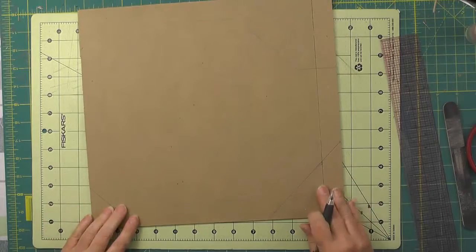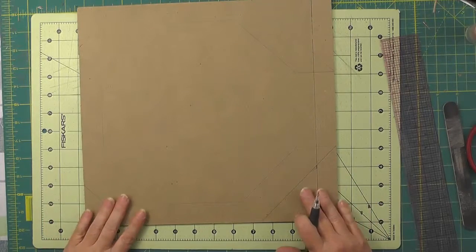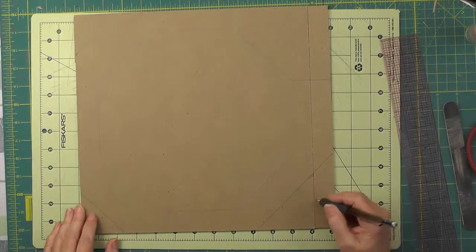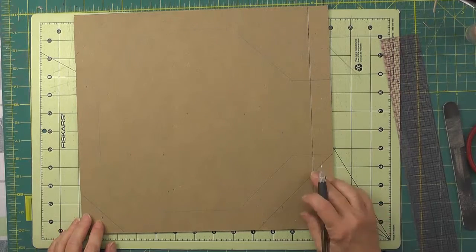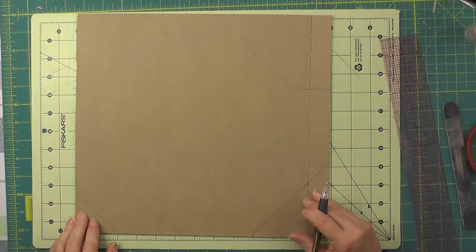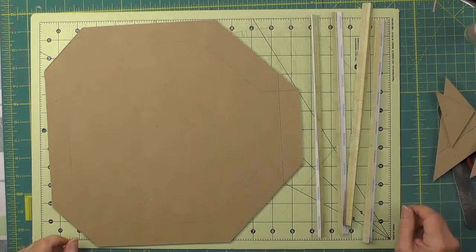Then I'll cut off these diagonal corners. You'll want to have a sharp blade and take your time, because you have to go through two thicknesses of chipboard.